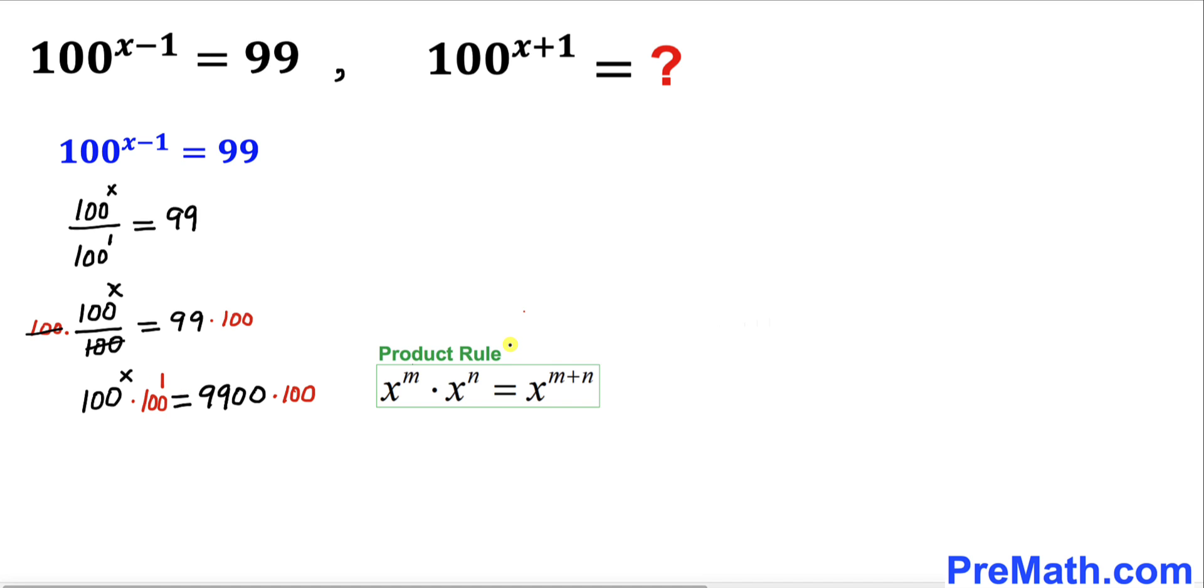And now let's recall the product rule of exponents. We are going to apply it on the left hand side of this equation. So the left hand side is going to become 100 power x plus 1 equals 990,000.